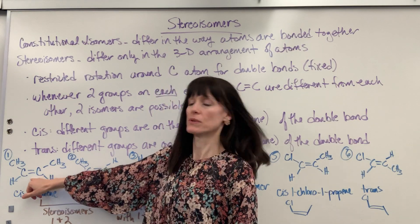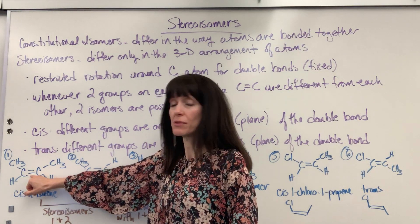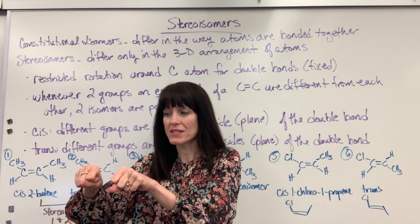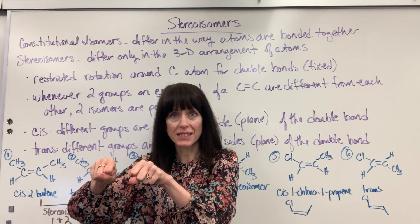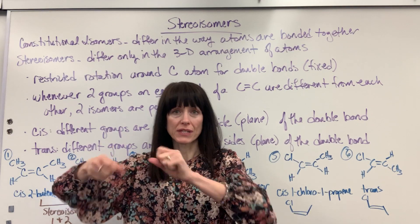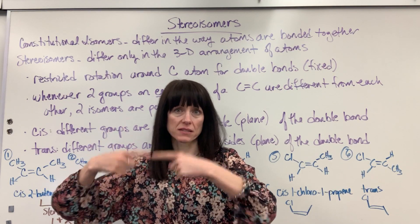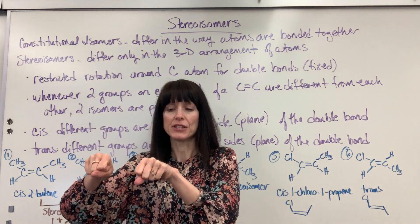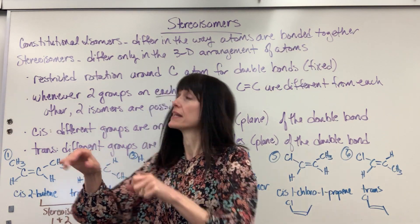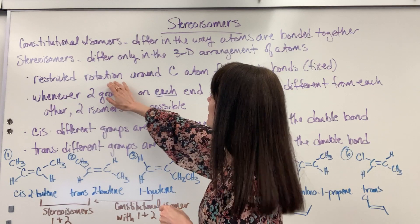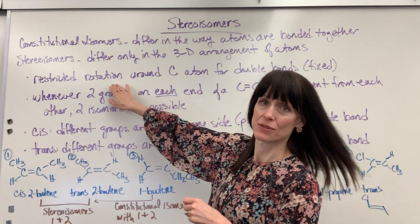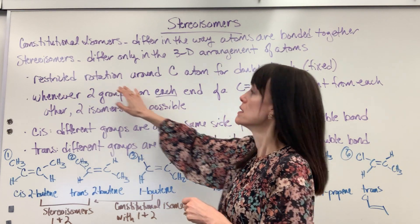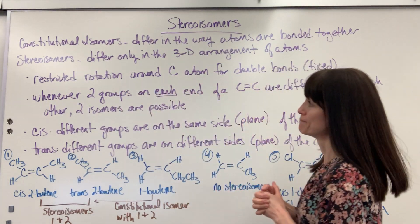Let's look at this 2-butene — that double bond right here. Those carbons are fixed. They don't rotate. It's not like they're an axle and they spin. They're fixed. They do not rotate. So it's a restricted rotation around that carbon double bond.